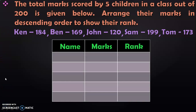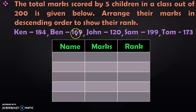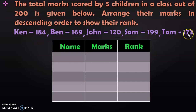Arranging the marks in descending order means arranging from big to small. Among these 5 numbers, we identify the biggest. First look at the hundreds place — all numbers have 1 there. So as per the rule, we move to the tens place for comparison. In the tens place, we have 8, 6, 2, 9, and 7, among which 9 is the biggest. So Sam, who scored 199, has scored the highest mark and stands in the 1st position.